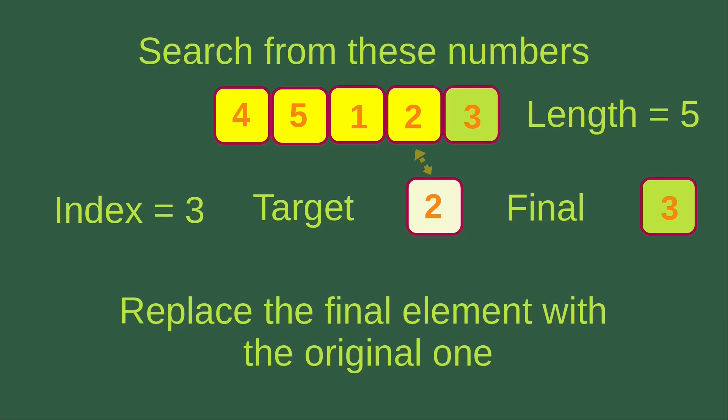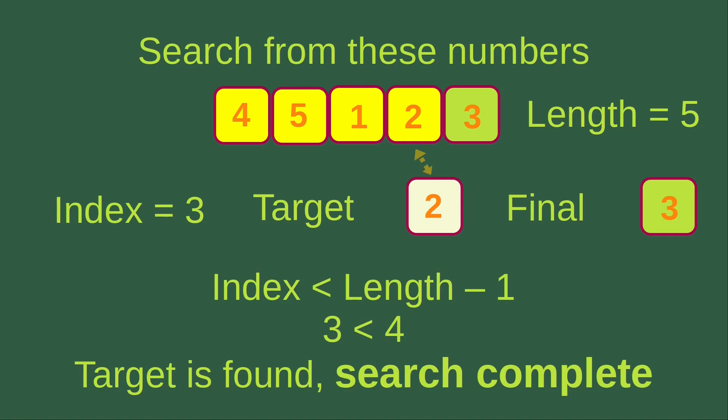When we find an element that matches the target, we replace the final element with the original one — number 3 is put back into the final position to restore the original array. We then check the condition: the index that stopped is 3, which is smaller than the length minus 1, which is 4. Since 3 is smaller than 4, this condition is satisfied, and we say the target is found in the array and the search is complete.